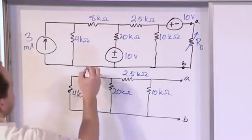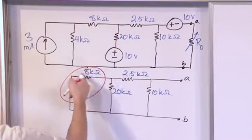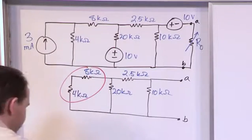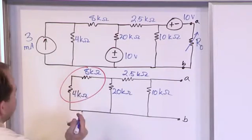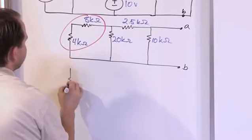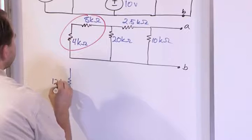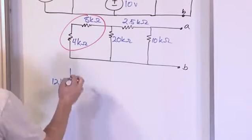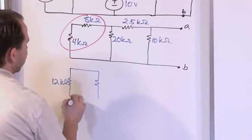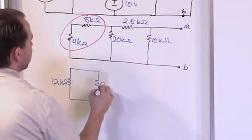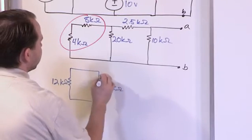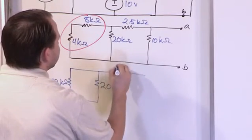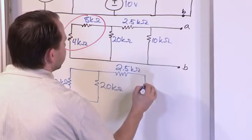So working on the back end of these guys here, these are in series, so we can just add them together. So let's redraw the circuit down below. 8 plus 4 is 12. So let's just put a 12 kilo ohm resistance here, and then we'll just redraw the rest of the circuit really quickly. This is 20 kilo ohms. This is 2.5 kilo ohms. This is 10 kilo ohms.